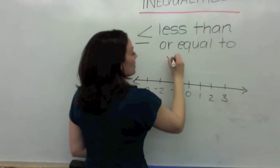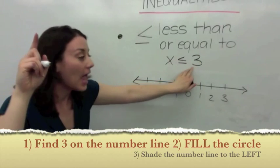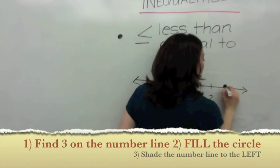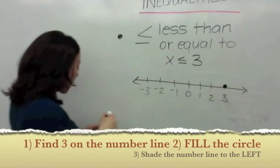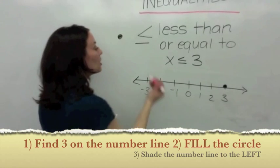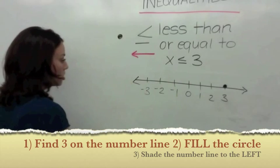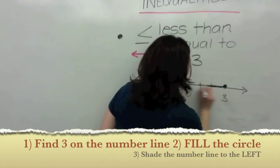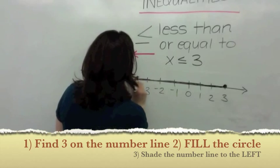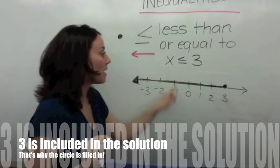Let's look at X is less than or equal to 3. Find the 3, and because it's equal to, splat it down and fill in 3. If X is less than 3 or equal to 3, you're going to shade everything to the left. When you do that, you're saying every number to the left of 3 — but also 3 — makes this statement true.